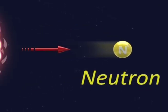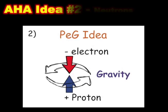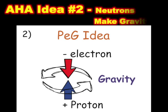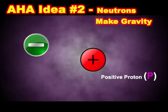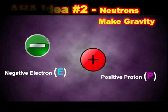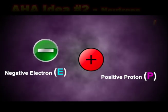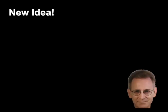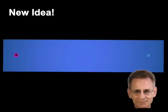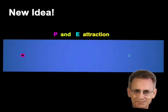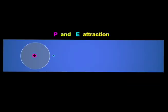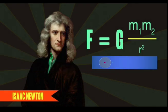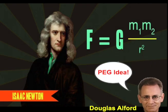What do neutrons do? In a neutron, the positive proton and negative electron pull very close together. Here is the new aha idea: this P and E attraction is what makes gravity.